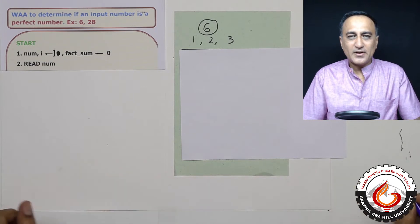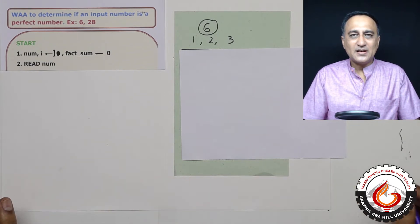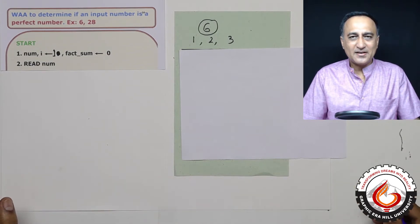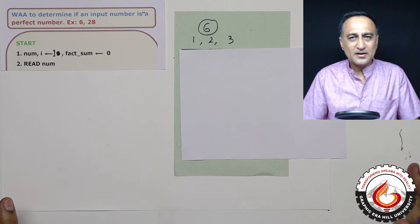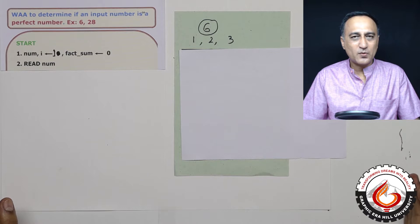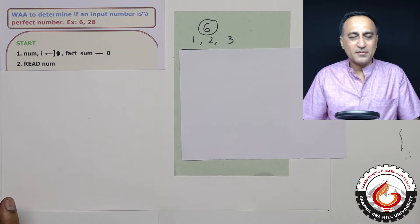If you take any number like say 10, what are the factors of 10? It is 1, 2 and 5. Why these are the factors? Because if I divide 10 by 1, the remainder is zero. If I divide 10 by 2, the remainder is zero. If I divide 10 by 5, the remainder is zero.